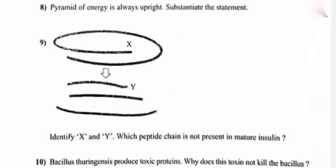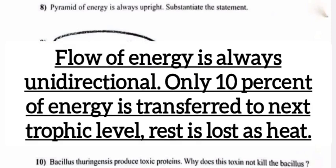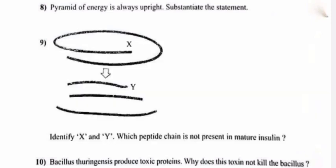Question 8: Pyramid of energy is always upright — substantiate the statement. Answer: Flow of energy is always unidirectional. Only 10% of energy is transferred to the next trophic level; the rest is lost as heat.